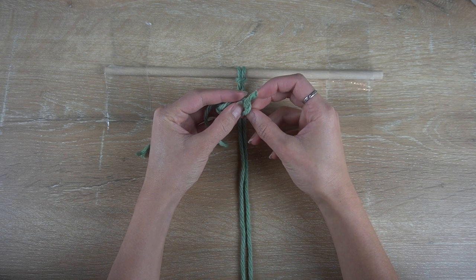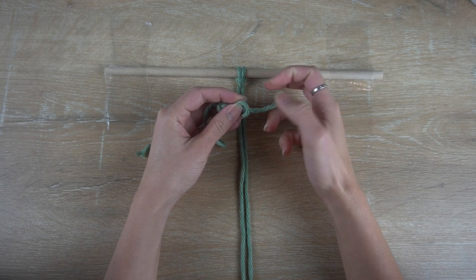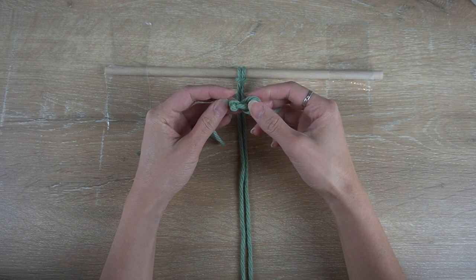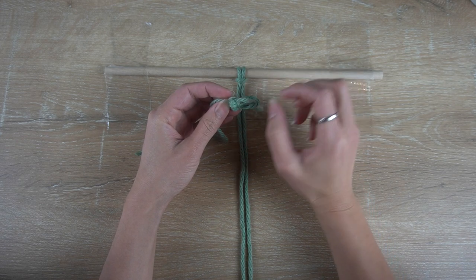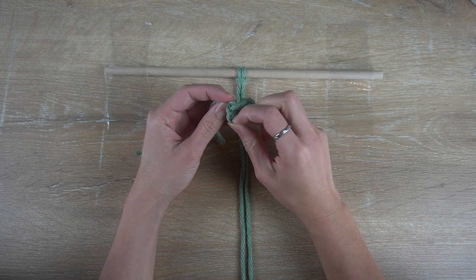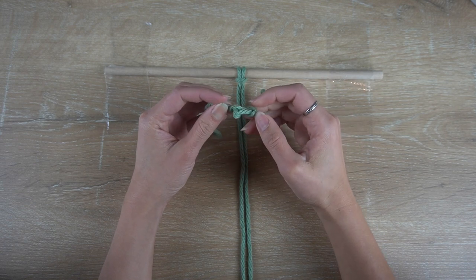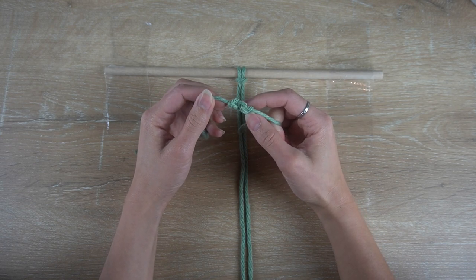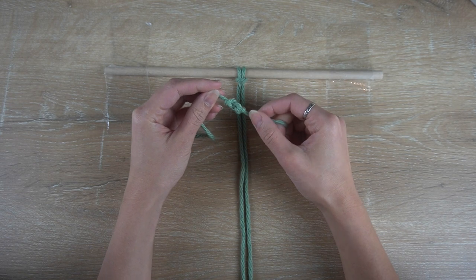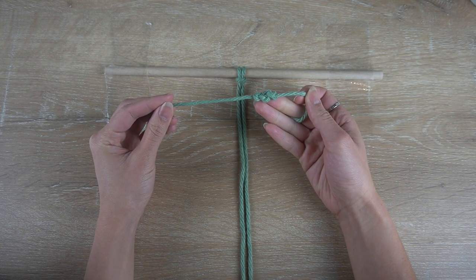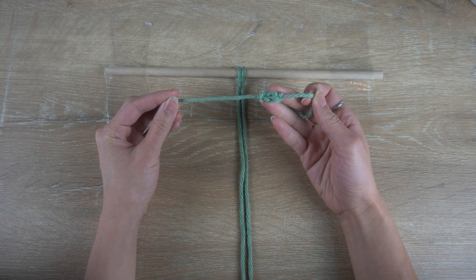Pull on the cord end through the loop. Pull on the cord end to tighten and this is a horizontal eternity knot.